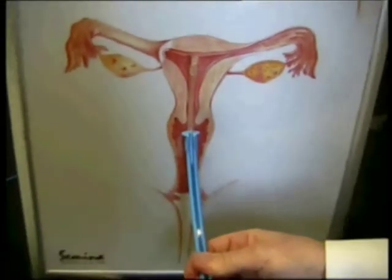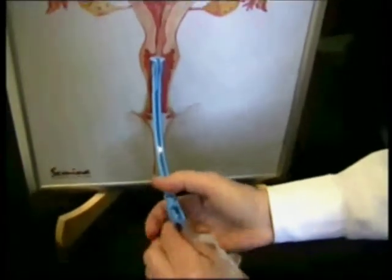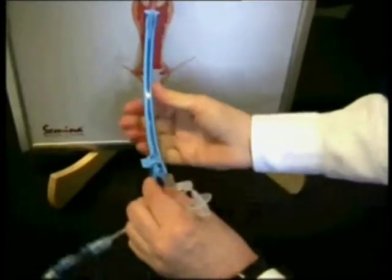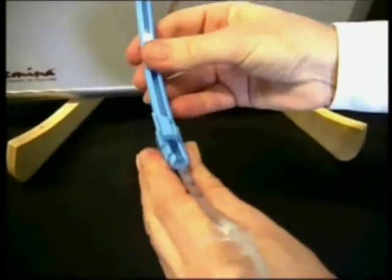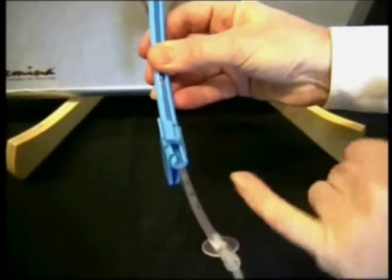Once the reproductive organs have been inspected, a dye can be injected through the vagina and cervix into the uterus to detect any blockage in the fallopian tubes.